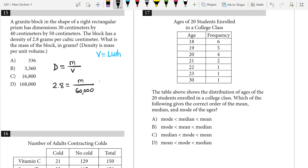I'm just going to do 60,000 times 2.8, and when you do that, you end up with 168,000, making D the correct answer.